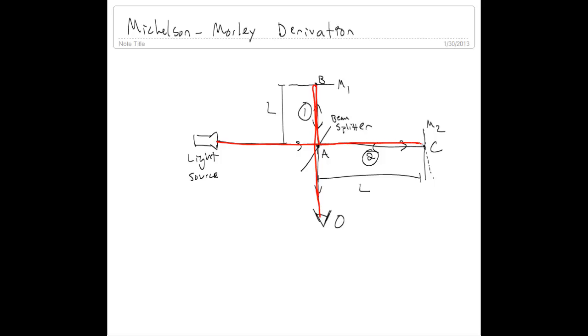The other half of the light will go through the beam splitter, reflect off of another mirror over here at C, reflect back to the beam splitter, and now the beam splitter will reflect it back to the observer.